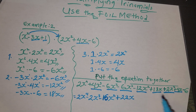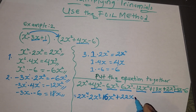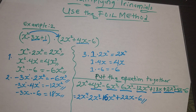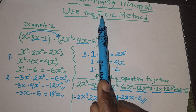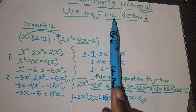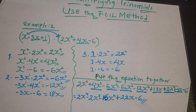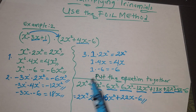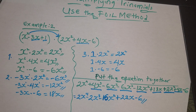So our final answer has been simplified. First, we used the FOIL method, which stands for First, Outer, Inner, and Last. Second, we put all the terms together. And lastly, we simplified by combining like terms. Thank you guys for watching — please subscribe if you have not.